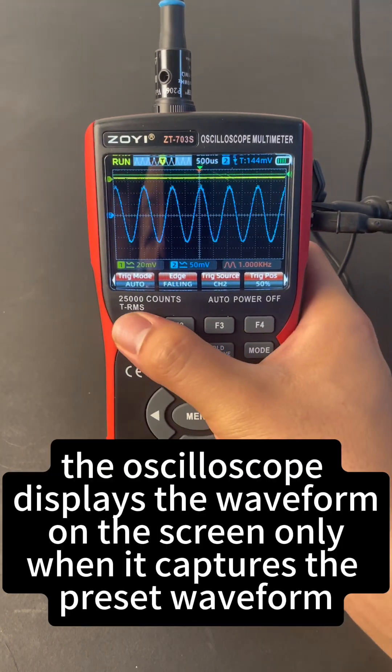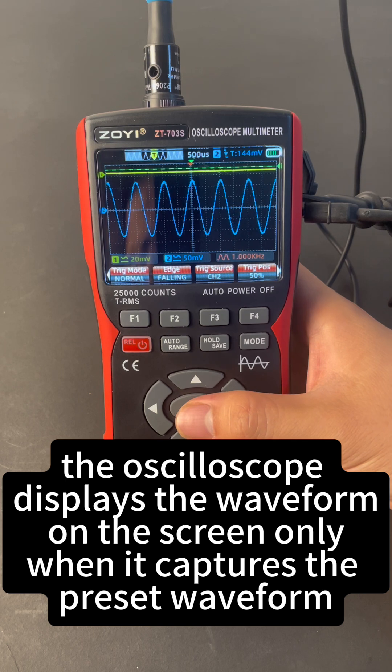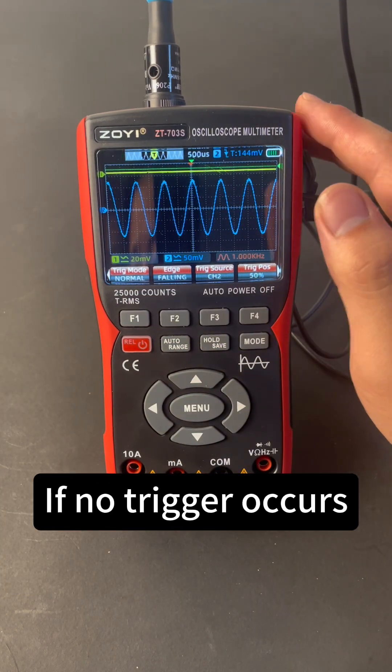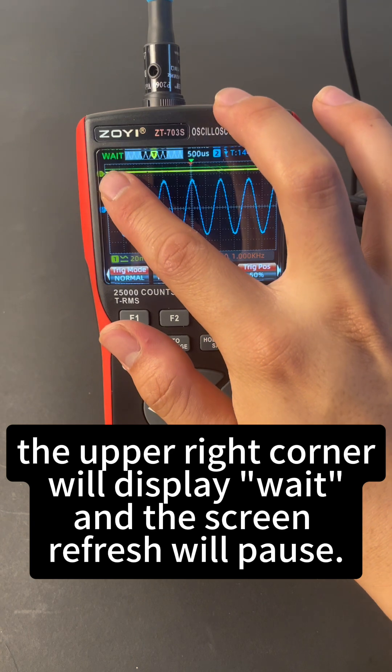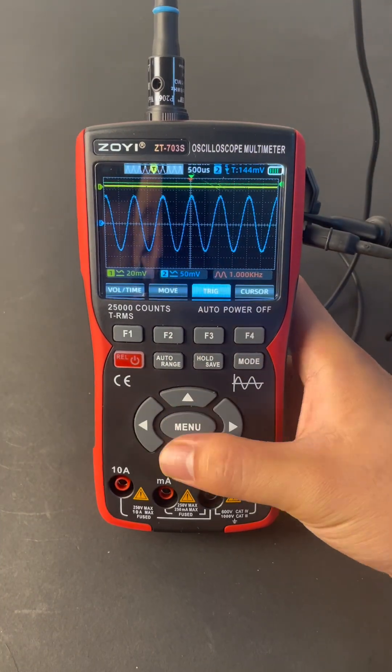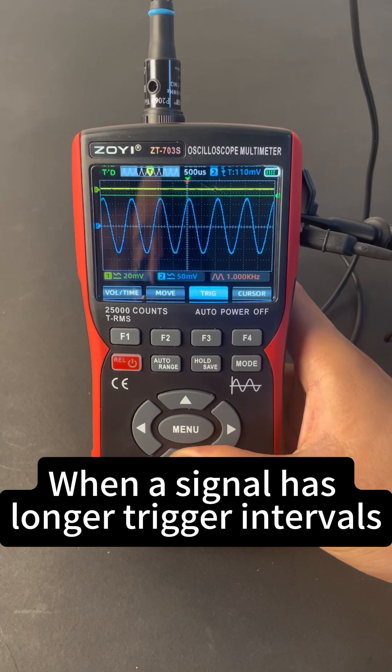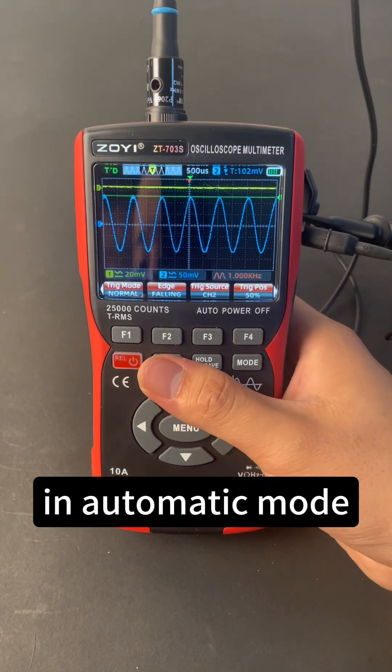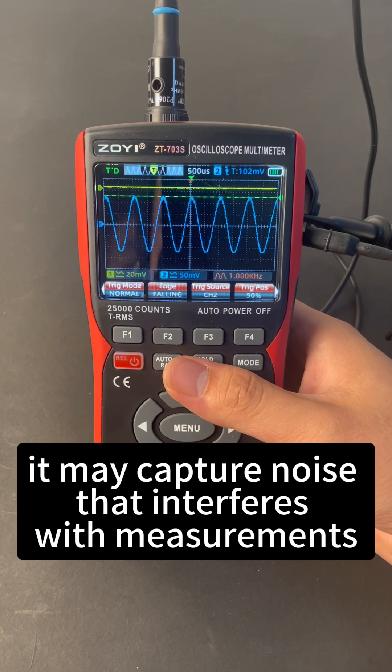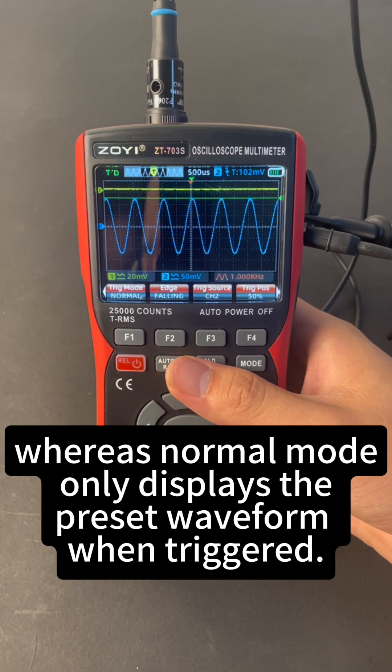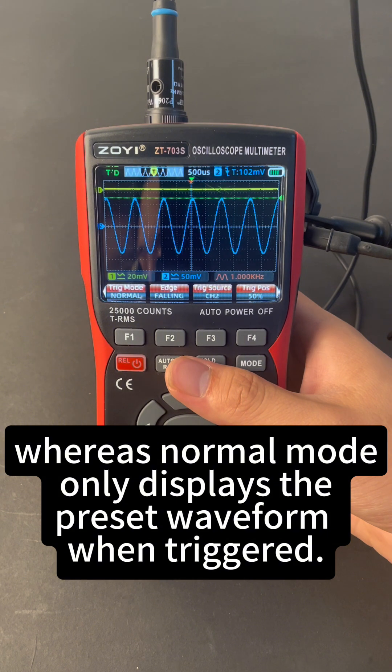In normal mode, the oscilloscope displays the waveform on the screen only when it captures the preset waveform. If no trigger occurs, the upper right corner will display weight and the screen refresh will pause. When a signal has longer trigger intervals, it is advisable to choose normal mode. Otherwise, in automatic mode, it may capture noise that interferes with measurements, whereas normal mode only displays the preset waveform when triggered.